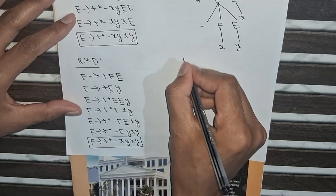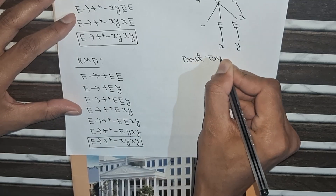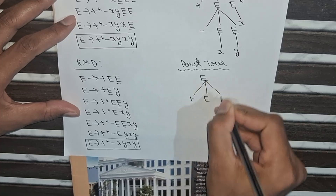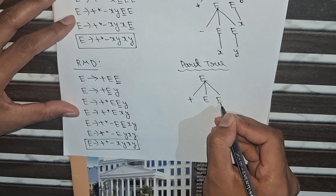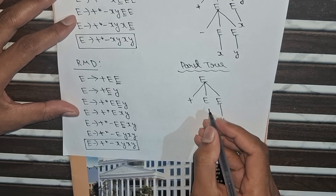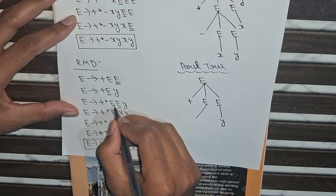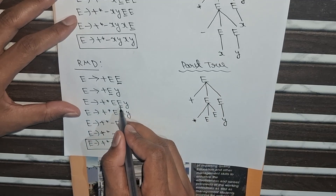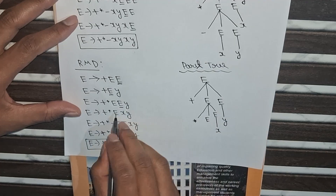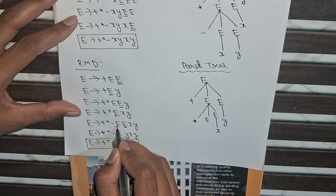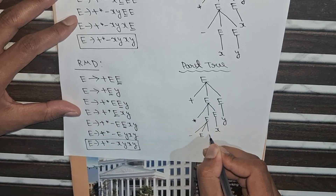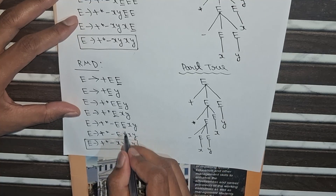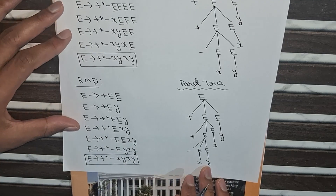Now I will make the parse tree for the RMD. First, initial symbol E gives +E and E. From the right side I am putting values, so first E implies y. Next this E I am putting as *EE: star E and E. Again putting the value from the right side: this E as x. After that I am putting this E value as -EE: so minus E and E. This E value I am putting y, and this E I am putting x, this E as y, this E as x. Like this we draw the LMD, RMD, and parse trees.